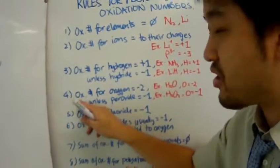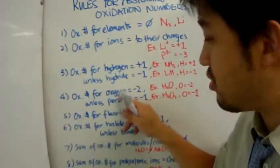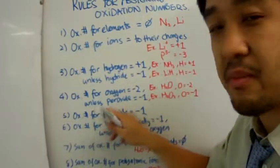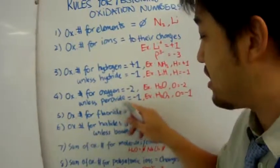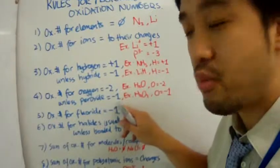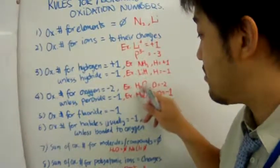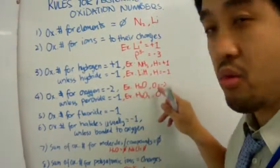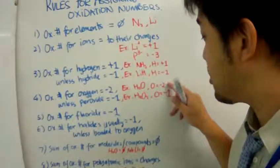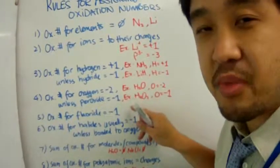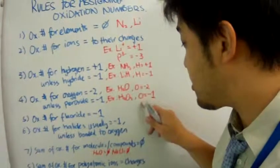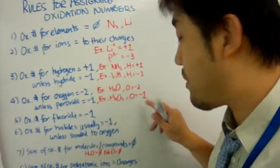The oxidation number for oxygen in a molecule or compound is always minus two, unless it's a peroxide — then it will have an oxidation number of minus one. For example, in water H₂O the oxygen will have minus two. In hydrogen peroxide H₂O₂, that oxygen will have minus one.